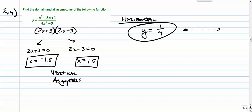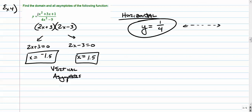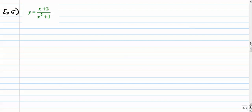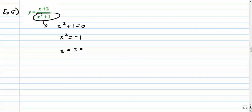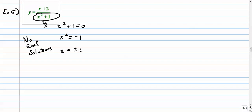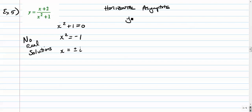Number 5 is an interesting one because the denominator, if you were to solve it, you'd get plus and minus i — basically just plus and minus i. So it doesn't have any real solutions, meaning no real domain restrictions. In terms of asymptotes, the numerator degree is smaller than the denominator degree, so we have a horizontal asymptote at y equals 0.